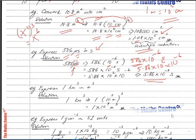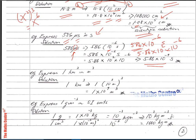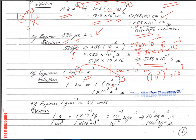Next, express 1 km³ in m³. One kilometer is 10³ meters, so replace km with 10³ m and cube it: (10³)³ = 10⁹. Therefore, 1 km³ = 1 × 10⁹ m³.